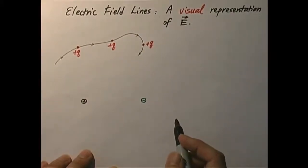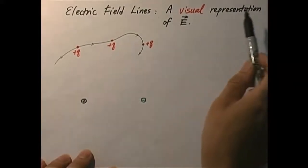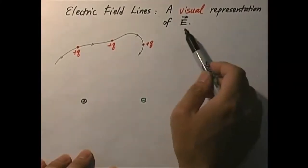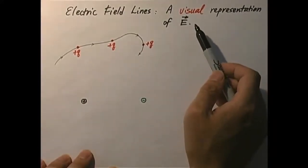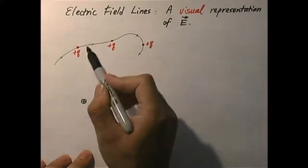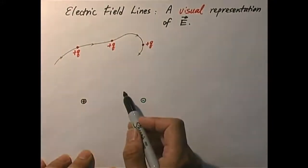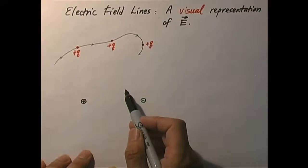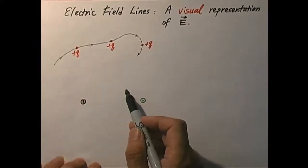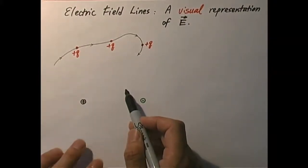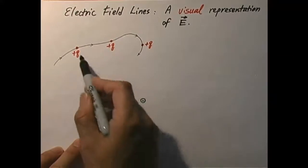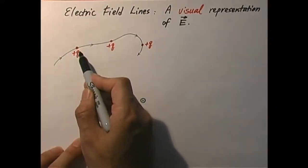Now let's take a look at the concept of what's called electric field lines. This is a visual representation of the electric field E. Suppose there is a region filled with an invisible electric field. I can draw a visual representation of the field by putting in a positive test charge, positive Q.